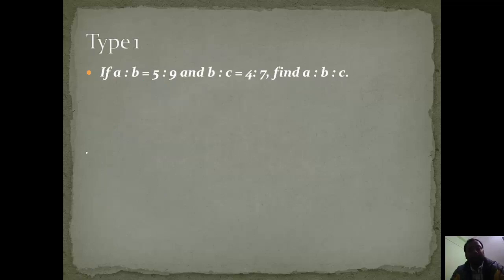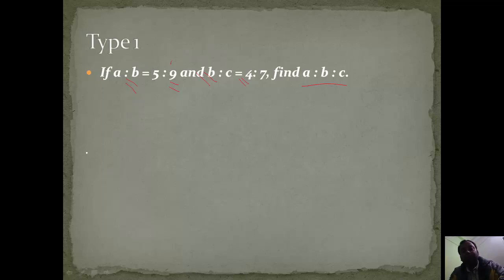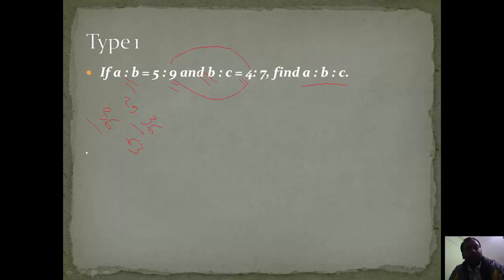There are 3 to 4 types of questions. The first type: a is to b equals 5 is to 9, and b is to c equals 4 is to 7. Here b is common in both. We need to convert it into a is to b is to c. Since b is 9 in the first ratio and 4 in the second, we multiply the first ratio by 4 and the second by 9. So 5×4 is to 9×4 gives 20 is to 36, and 4×9 is to 7×9 gives 36 is to 63. Since 36 is common, we write a is to b is to c as 20 is to 36 is to 63.